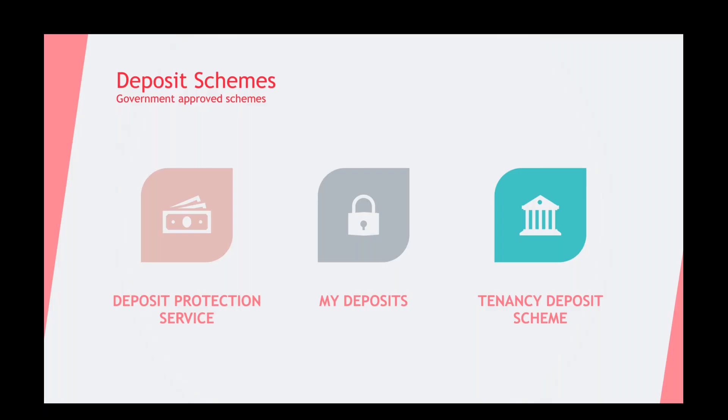Let's cover off the approved deposit schemes. If you use our service, you will most likely use the Deposit Protection Service. This was originally set up as a custodial scheme — you pay your money to them and they protect and hold it throughout the tenancy. There is now also an insured scheme with the DPS where you retain the money and pay a fee to insure it, but it needs to be ring-fenced in a separate account with a protection certificate. My Deposits is another scheme — originally insurance-backed, they now offer a custodial service too. The Tenancy Deposit Scheme was originally set up as an insured scheme and now offers both custodial and insured options.